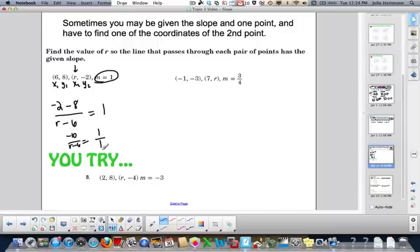You can make 1 a fraction just by putting it over 1, and then you can cross-multiply. r minus 6 equals negative 10 times 1, which is negative 10. Add the 6. We get r equals negative 4.